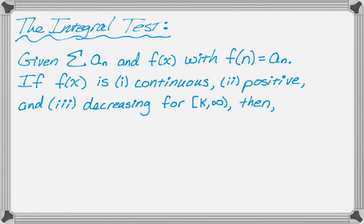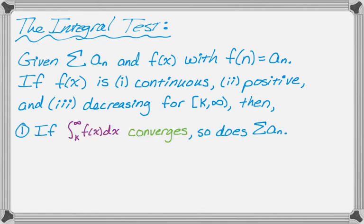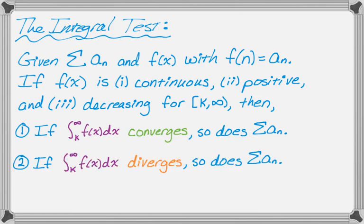If the integral from k to infinity of f(x)dx, so that's an improper integral, if that integral converges, then so does the sum of a_n. On the other hand, if the integral from k to infinity of f(x)dx diverges, then so does a_n. So really, it just comes down to they do the same thing.